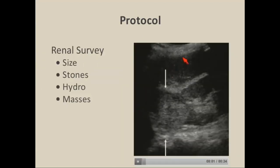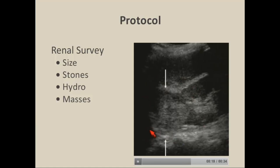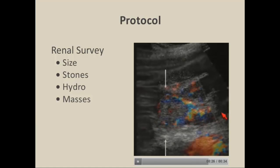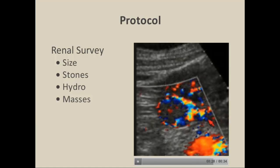Here's a look at a kidney as part of our renal survey. We evaluate size, echogenicity, presence of stones, hydronephrosis, or masses. In this case of a patient presenting with hypertension, you can see a large mass projecting from the upper pole of the kidney — obviously an important diagnosis not to overlook. It's also important to turn color on, because renal cell carcinoma is typically hypervascular relative to the normal parenchyma.